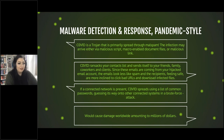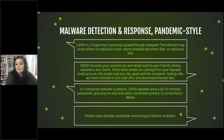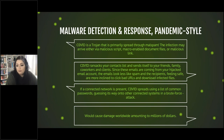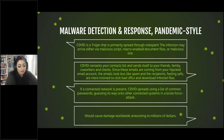Let's apply what we've learned from pandemic response to a security incident. Here we have COVID-C0V1D, a Trojan primarily spread through mal-spam. It can arrive via malicious script, macro-enabled document files, or malicious links. COVID will ransack your contact list and send itself to your friends, family, coworkers, and clients. Since the emails are coming from your hijacked email account, they look less like spam, so recipients — feeling safe — are more inclined to click bad URLs and download infected files. If a connected network is present, COVID spreads using a list of common passwords, often guessing its way onto other connected systems in a brute force attack, and can cause damage worldwide amounting to millions of dollars.